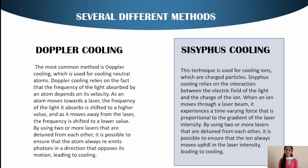The second method is Sisyphus cooling. This technique is used for cooling ions, which are charged particles. Sisyphus cooling relies on the interaction between the electric field of the light and the charge of the ion. When an ion moves through a laser beam, it experiences a time-varying force that is proportional to the gradient of the laser intensity. By using two or more lasers that are detuned from each other, it is possible to ensure that the ion always moves uphill in the laser intensity, leading to cooling.